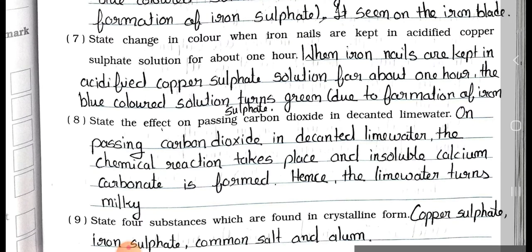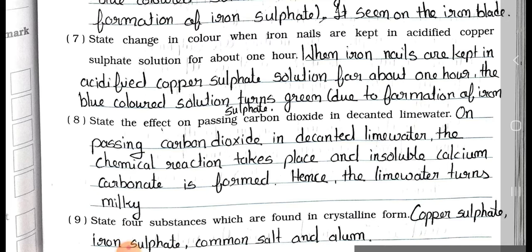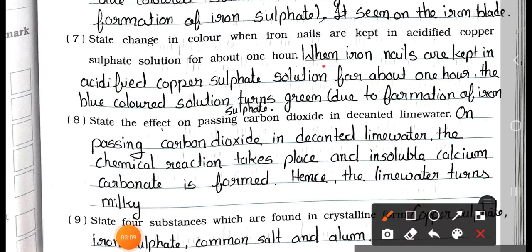Question number 7: State the change in colour when iron nails are kept in acidified copper sulfate solution for about an hour. Answer: When iron nails are kept in acidified copper sulfate solution for about one hour, the blue coloured solution turns green due to the formation of iron sulfate.